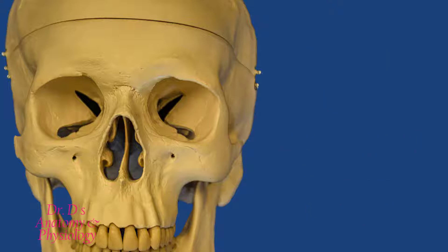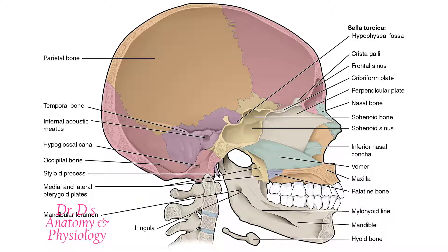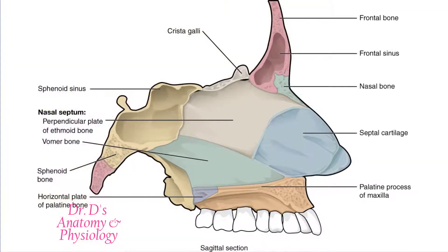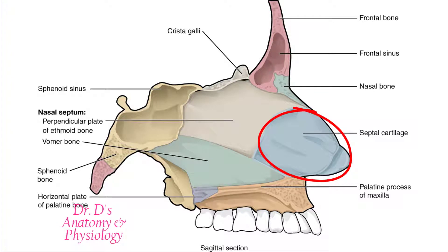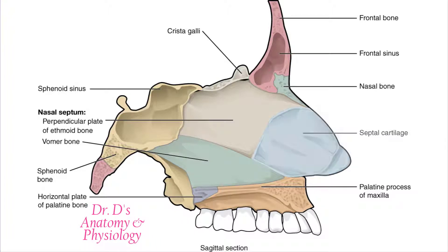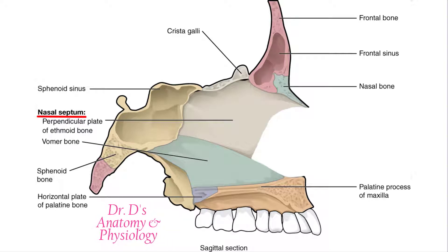Let's first consider the nasal septum. This is a sagittal section through a skull, practically down the midline but slightly off to the side so we can see the nasal septum. A good portion of the nasal septum is composed of cartilage — there is a piece of cartilage that works with the other bones to give us the complete separation of the two nasal cavities. If we remove the cartilage from consideration, because technically it's not part of the skull, we then have two bones that form our nasal septum.